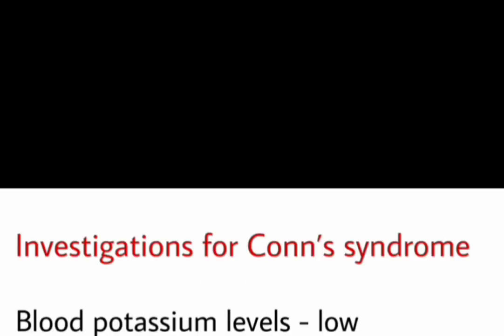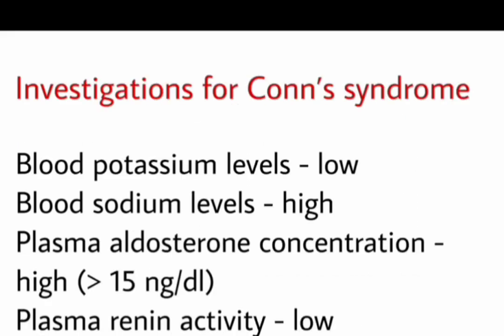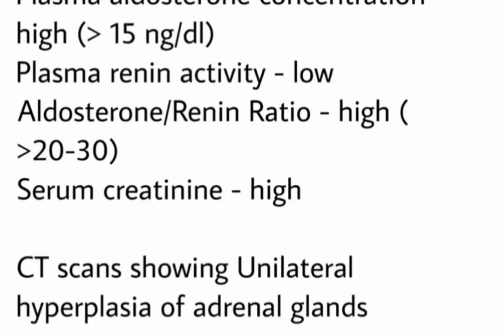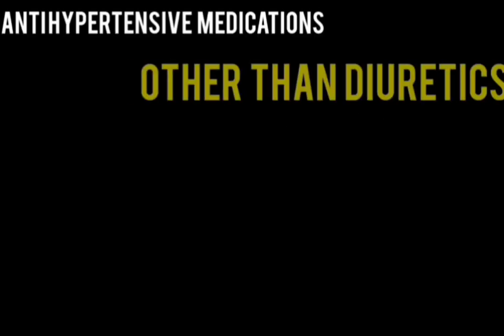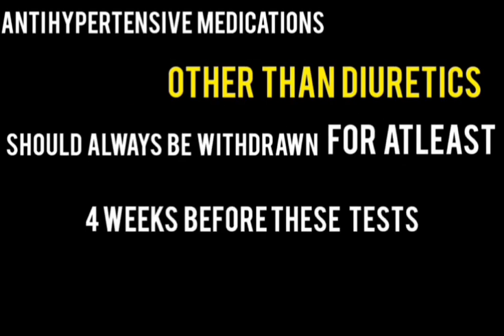Examination for Conn syndrome includes blood tests for potassium levels, plasma aldosterone concentration, and plasma renin activity. Urine tests for electrolytes and creatinine levels, and a CT scan for confirmation of tumour on adrenal glands. Anti-hypertensive medications other than diuretics should always be withdrawn for at least four weeks before these tests.